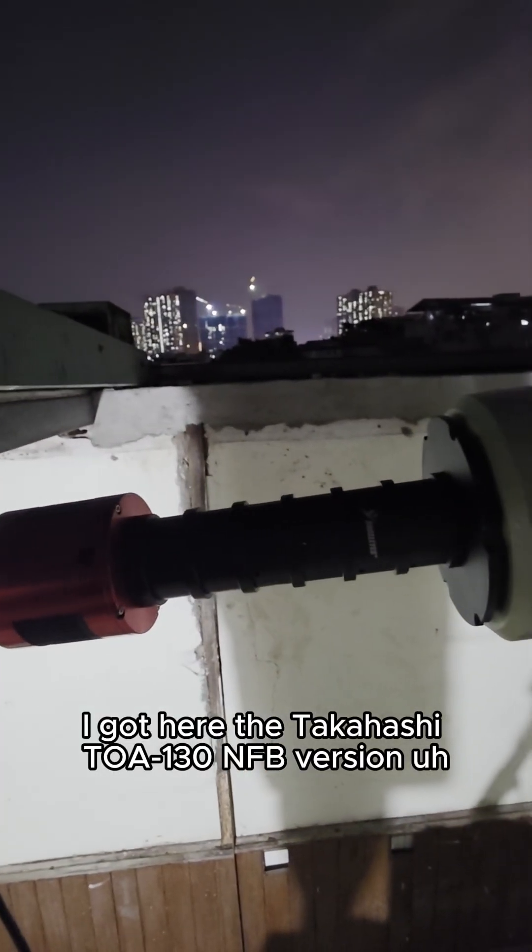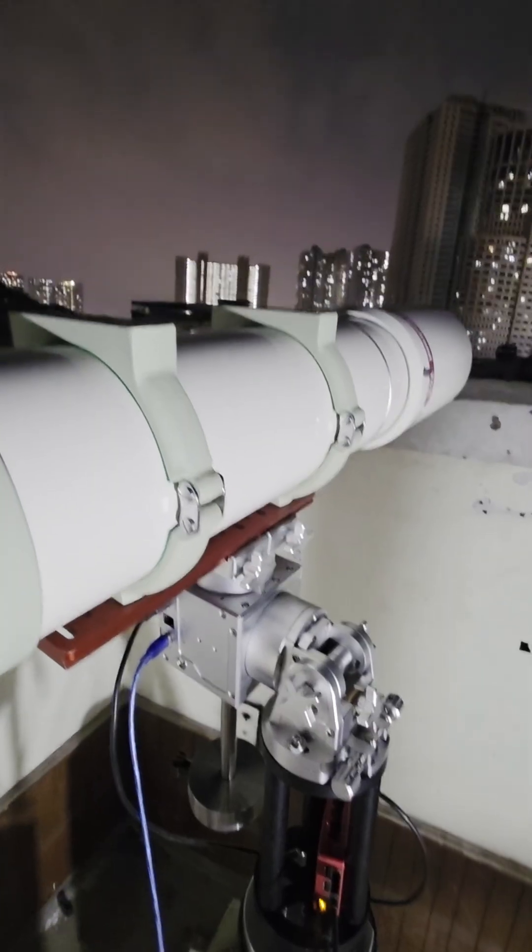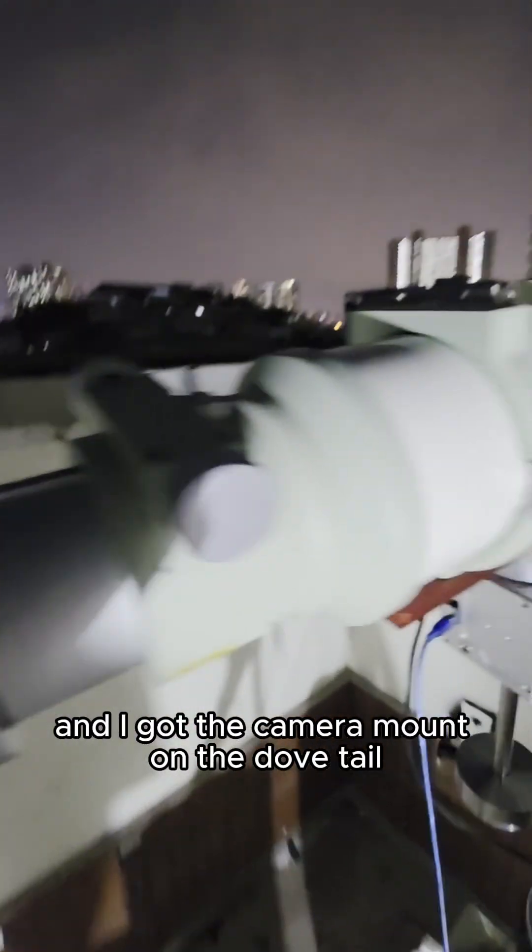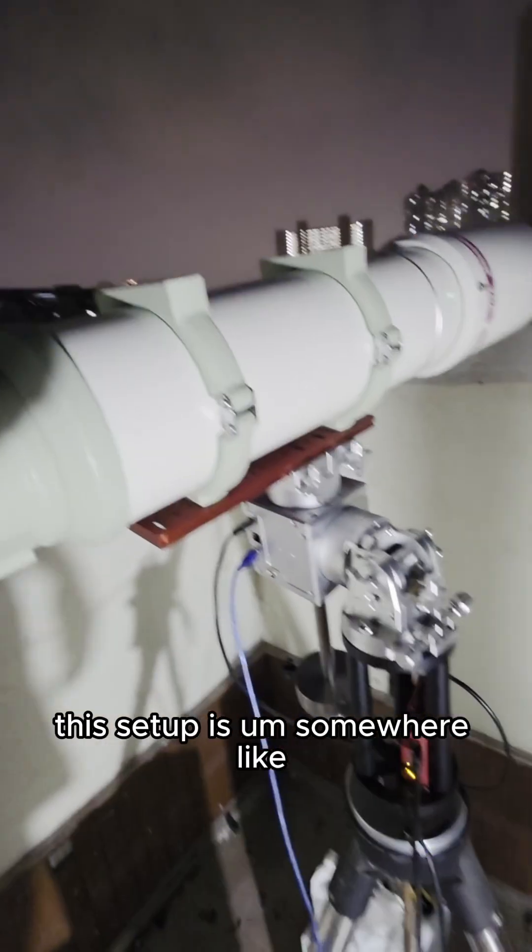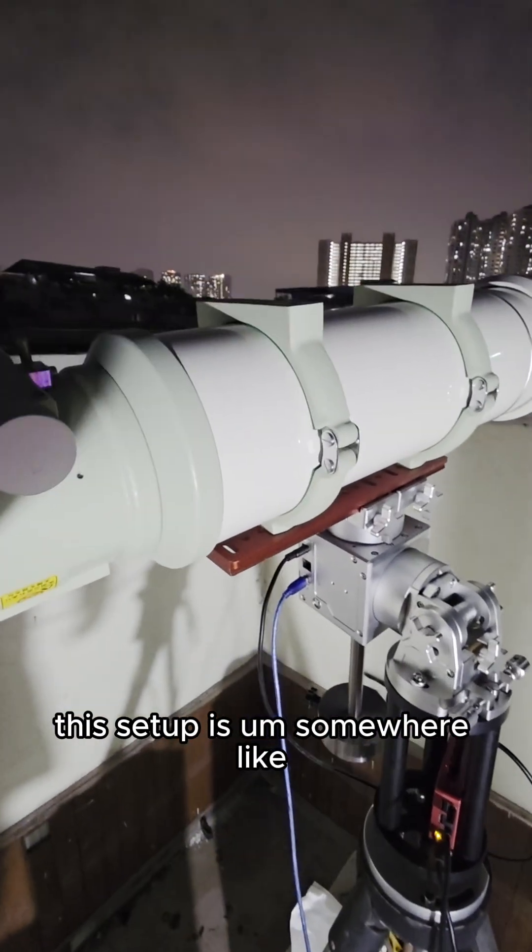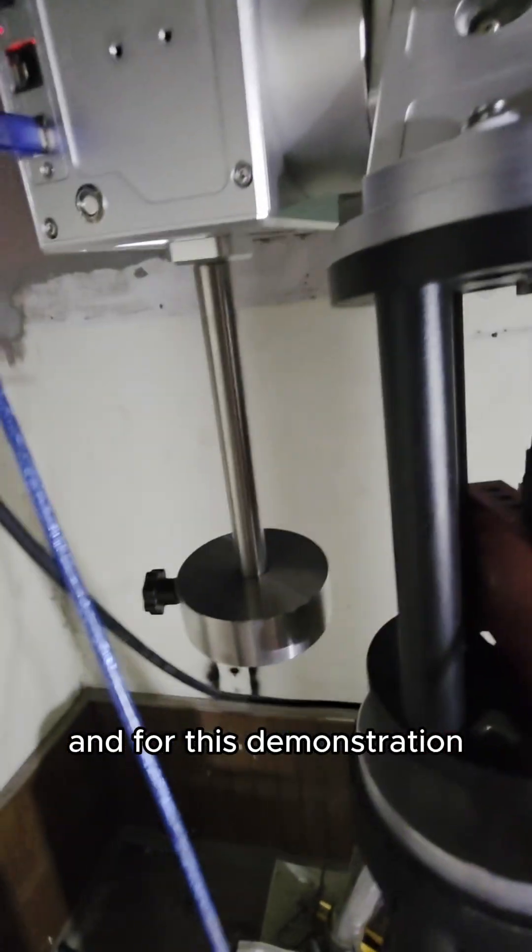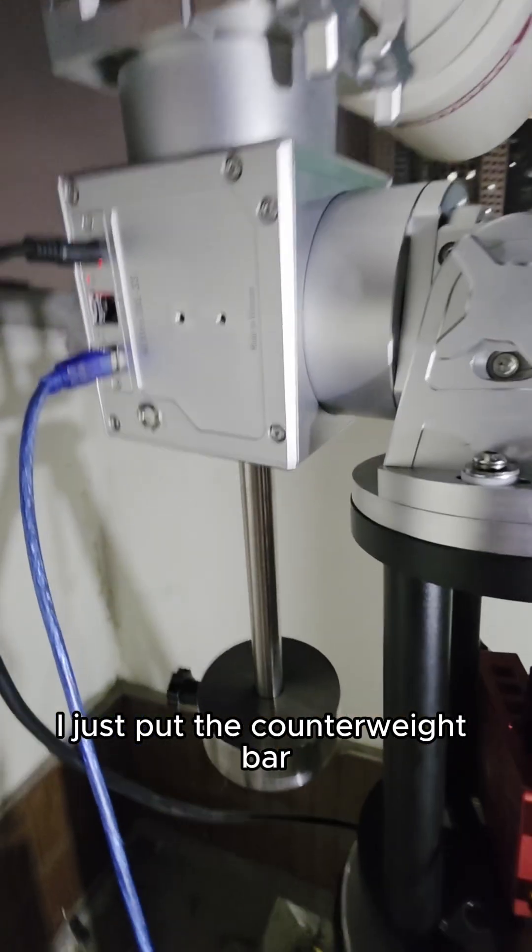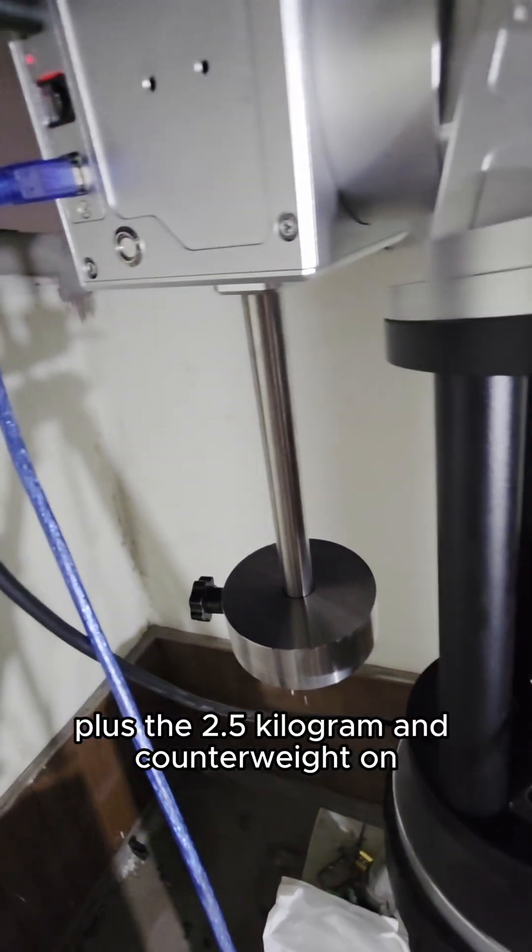I got here the Takahashi TOA-130 NFB version. It's the heaviest version of the TOA-130 and I got the camera mounted on, the dovetail, everything mounted on. This setup is somewhere like about 14 kilograms. And for this demonstration,